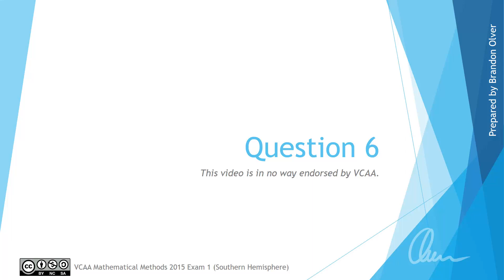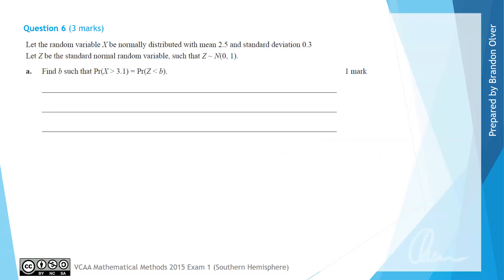Welcome to question 6 of the 2015 Mathematical Methods Exam 1. In this video we will be looking at the solution and examination advice for this question. A reminder that this video is in no way endorsed by VCAA. For question 6, let the random variable X be normally distributed with a mean of 2.5 and a standard deviation of 0.3.